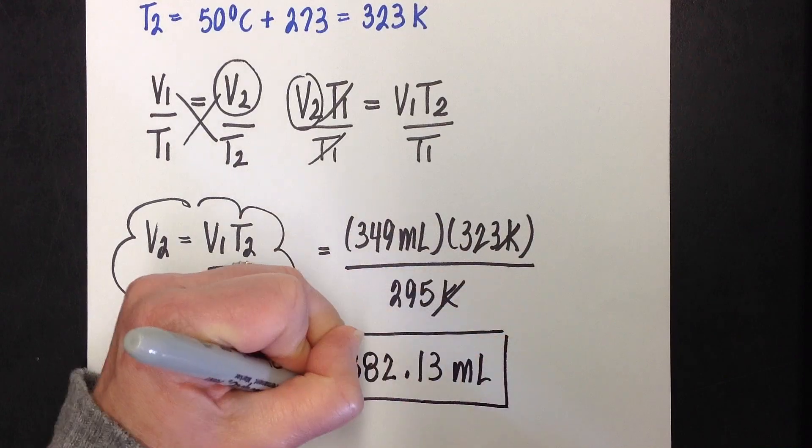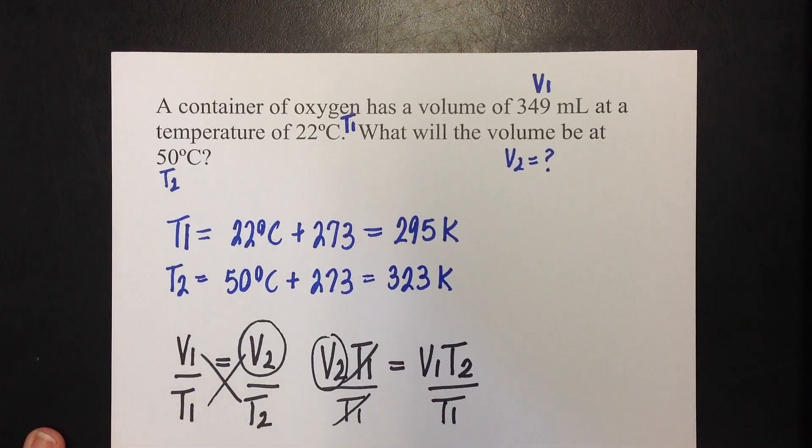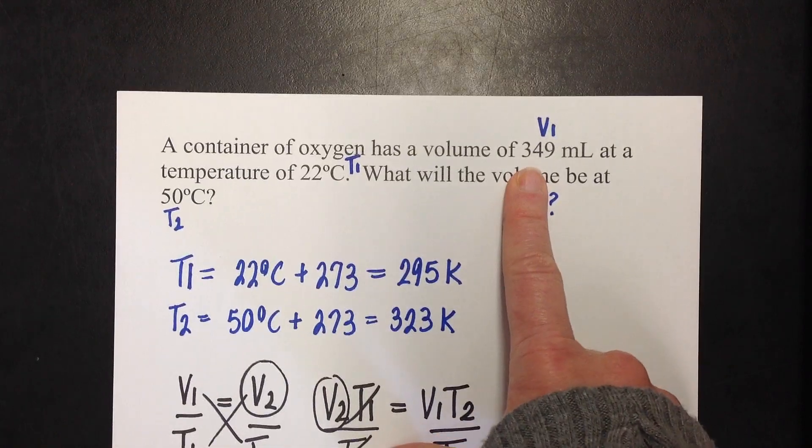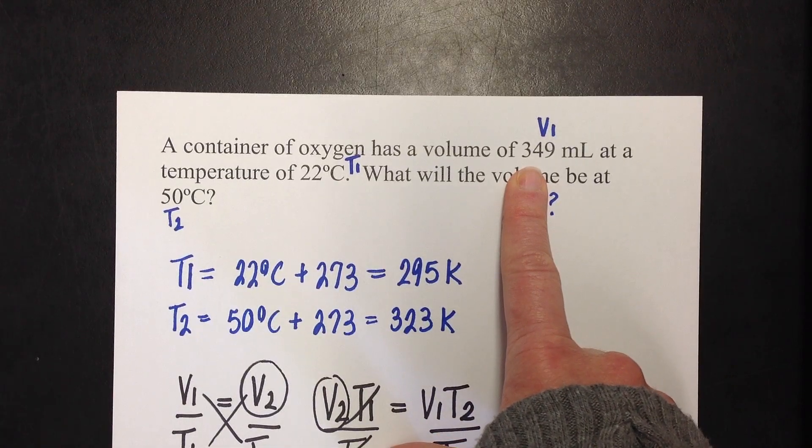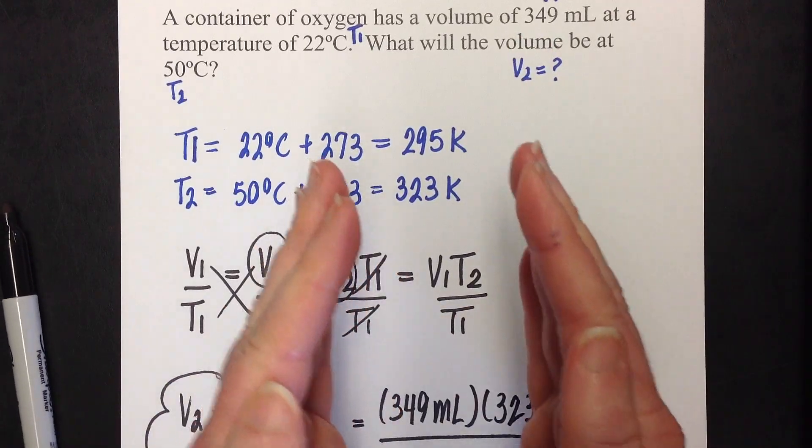All right. So, let's take a look at that and see if it looks reasonable. I started off with 349 milliliters at 22 degrees Celsius. Okay. So, I've got my 349 milliliters at 22.